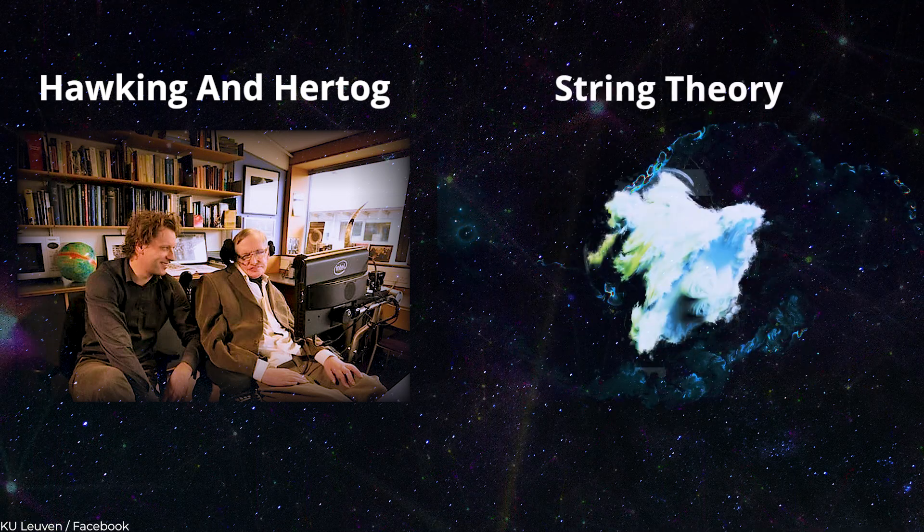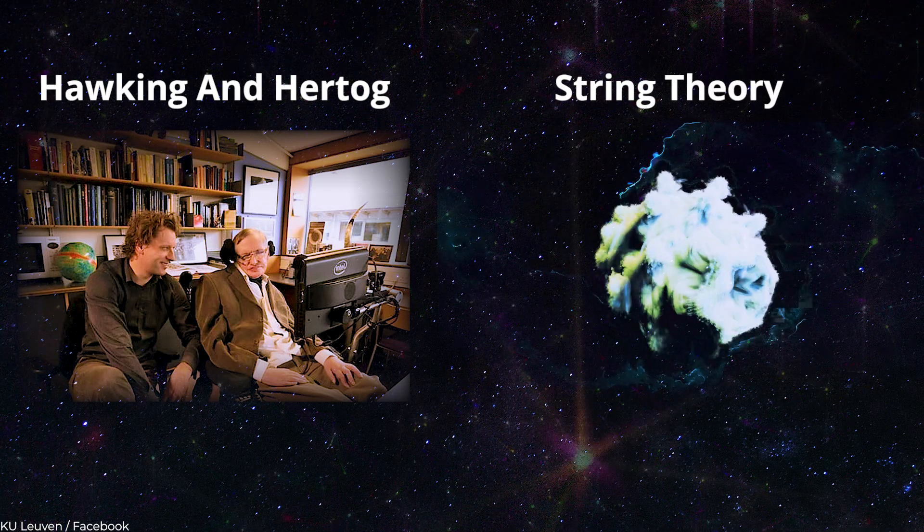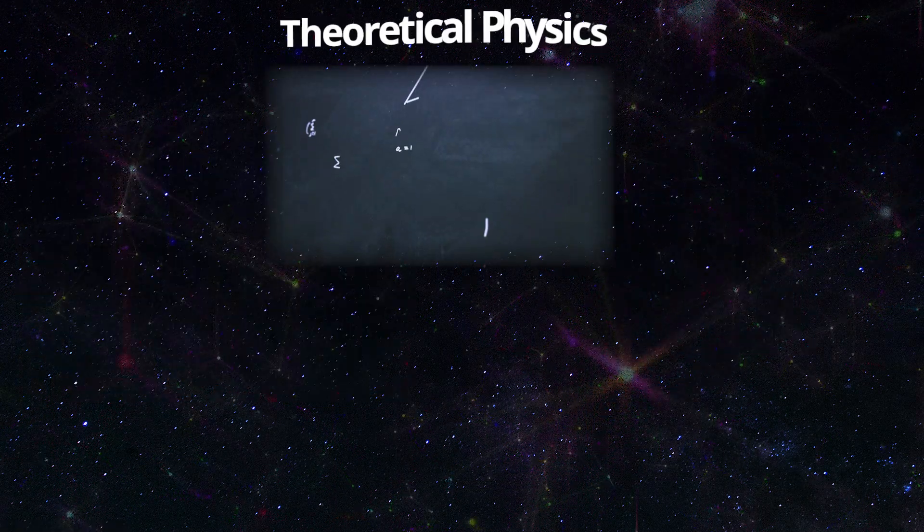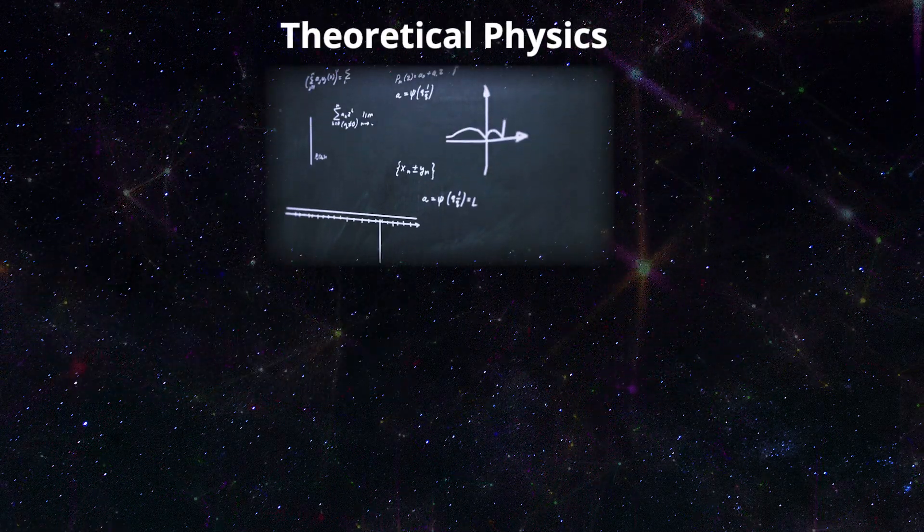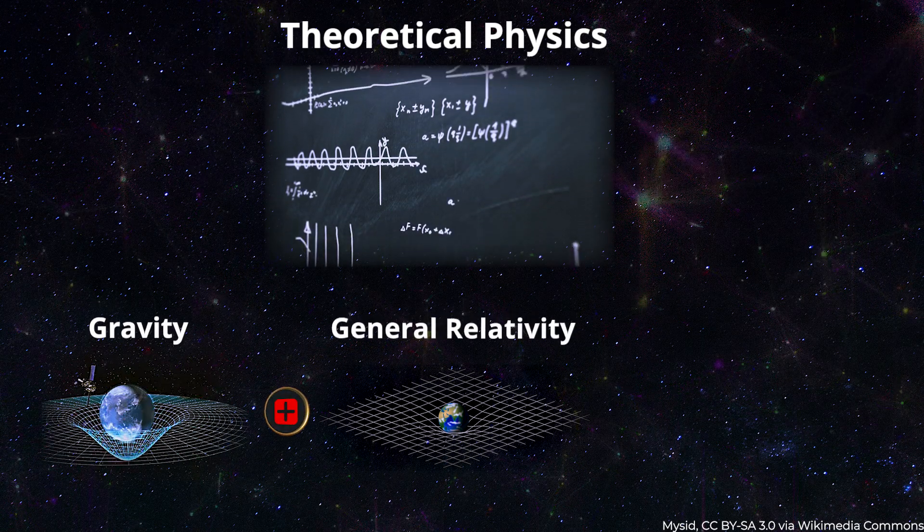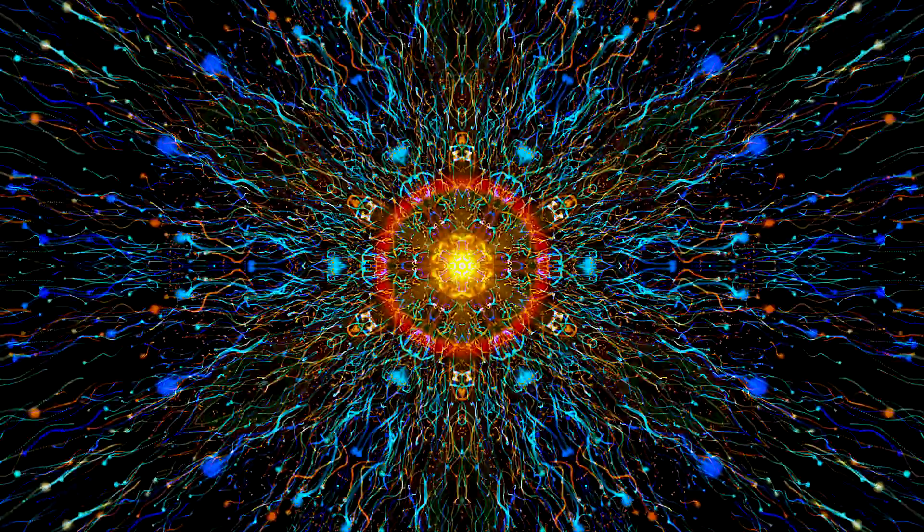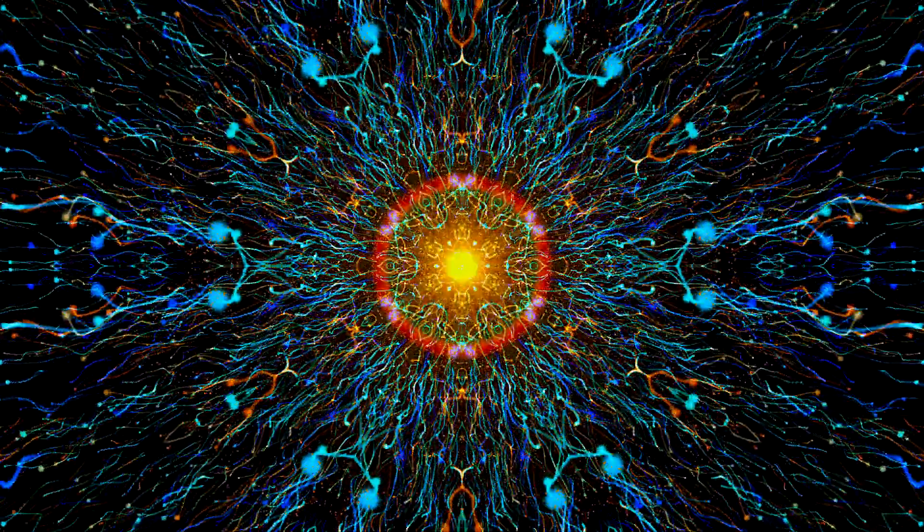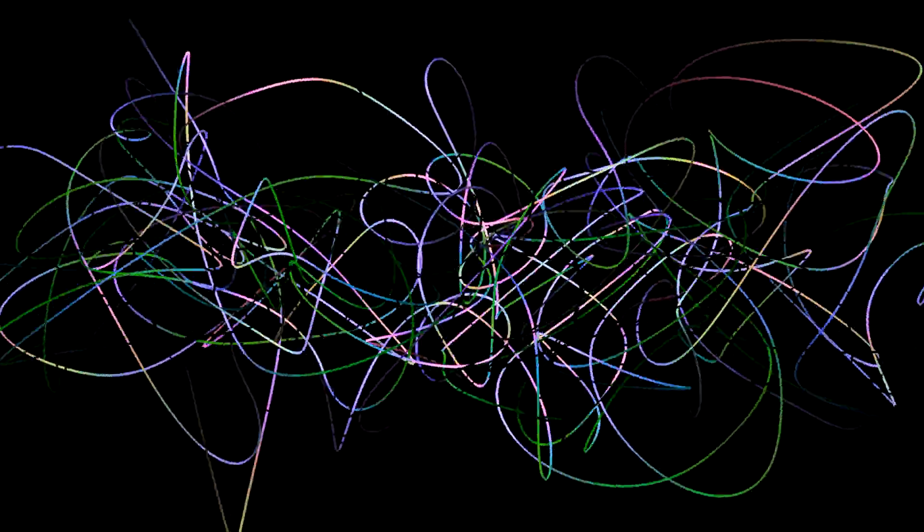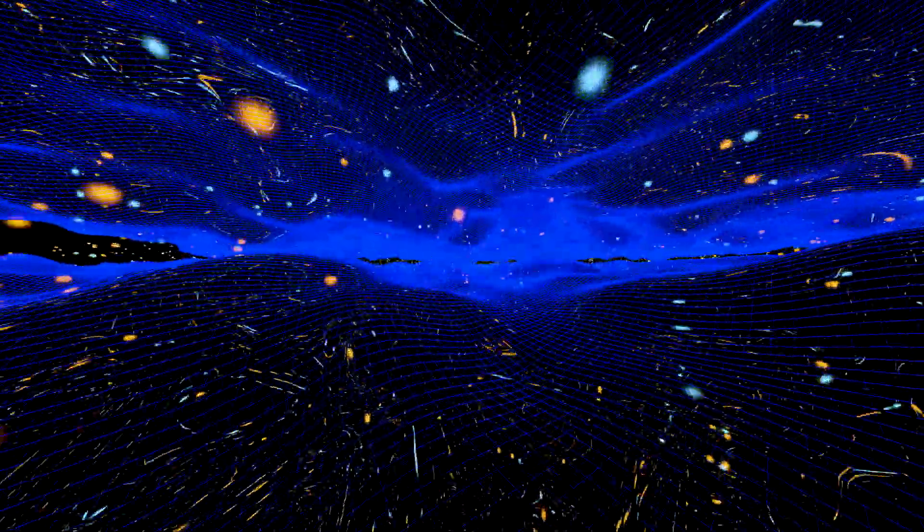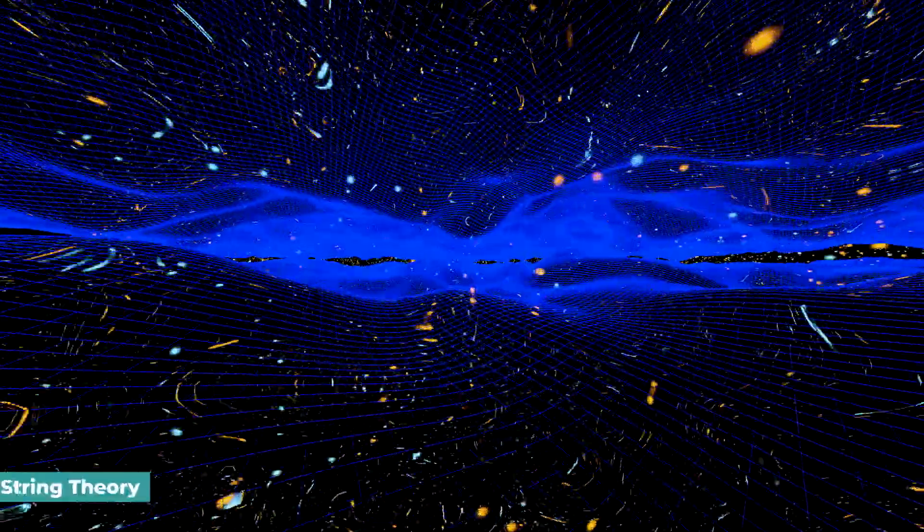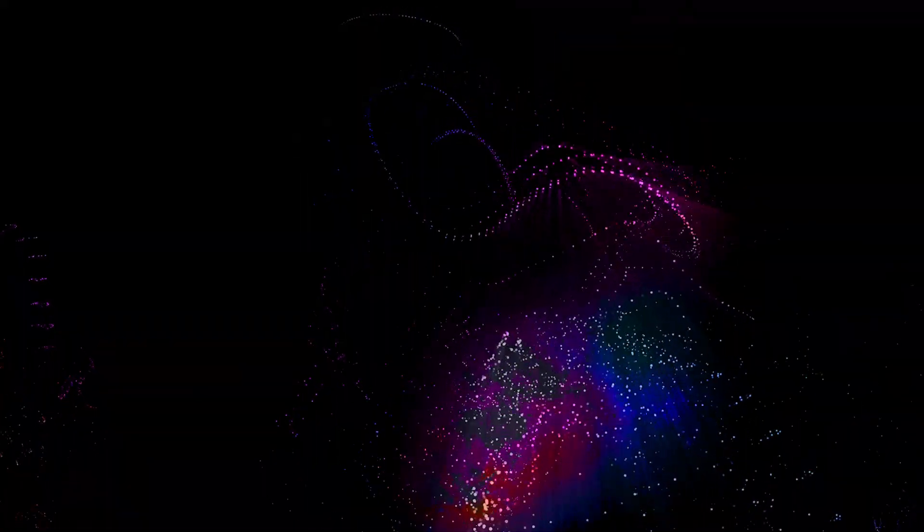Hawking and Hertog's theory of eternal inflation is based on string theory. It is a branch of theoretical physics that combines gravity, general relativity, and quantum physics. One way it does this is by describing the essential parts of the universe as tiny, vibrating strings. Their method is based on the idea of holography from string theory, which says that the universe is a giant, complex hologram.